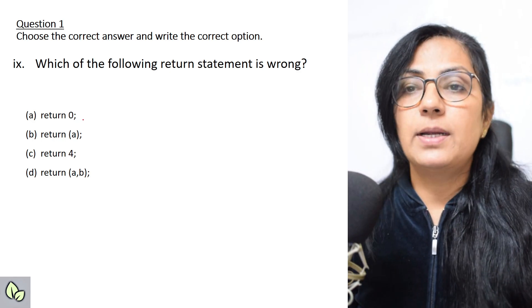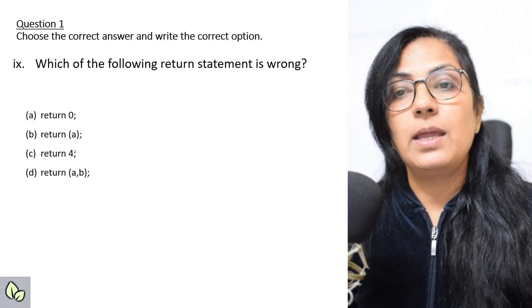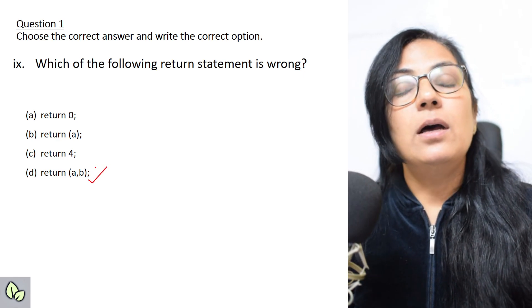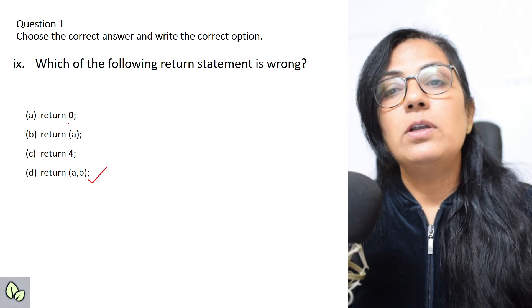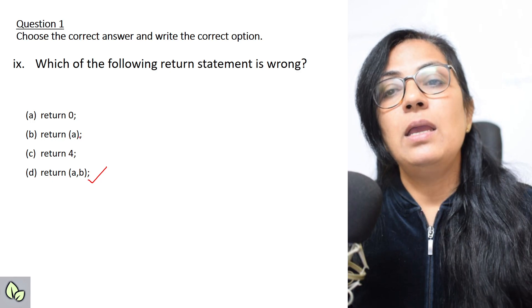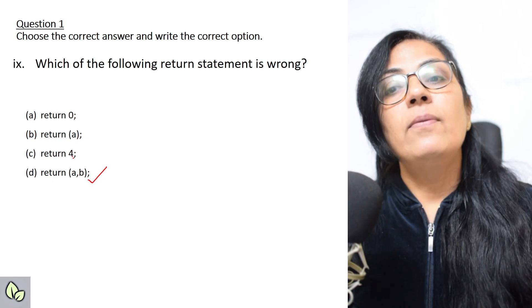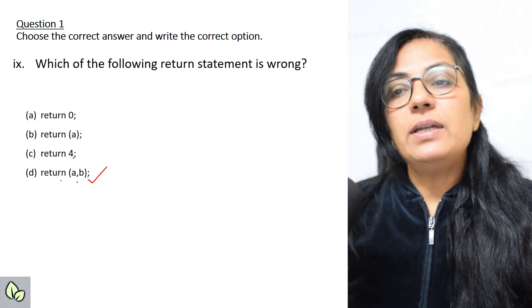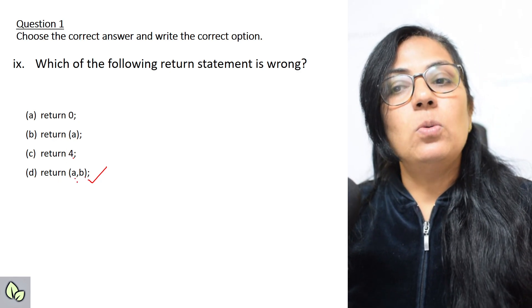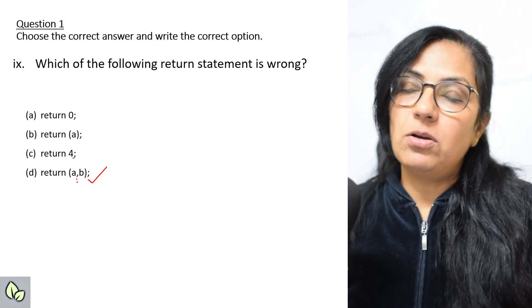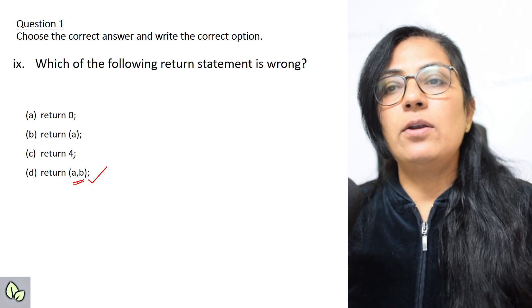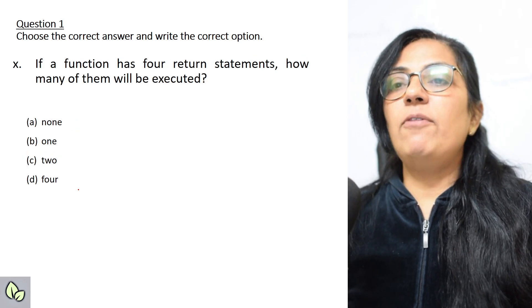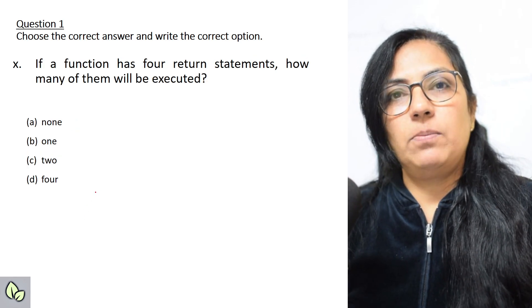Which return statement is wrong? return 0; is correct, return a; is correct, return (a); is correct — the value written with or without brackets is valid. However, return a, b; is a wrong statement. With return, you can only use one value, either a constant or a variable. Two values are not possible.